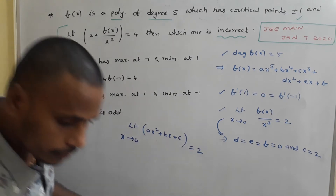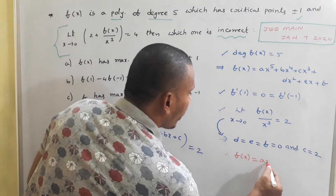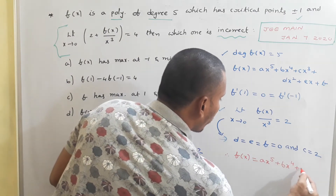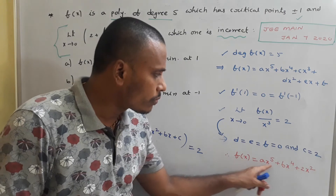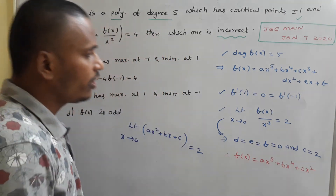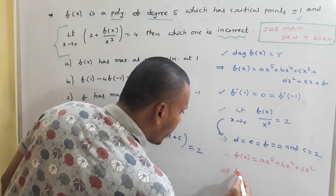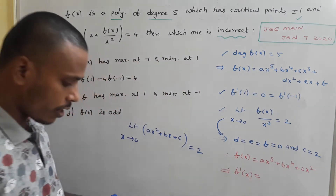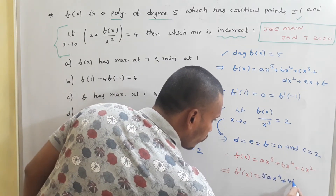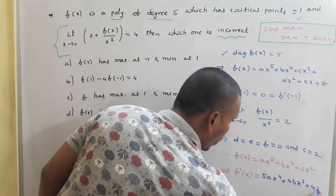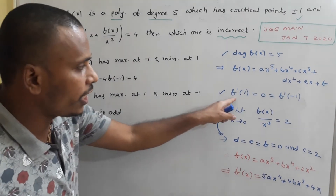Therefore, f(x) = ax⁵ + bx⁴ + 2x³. We still need to find a and b using the critical point conditions f'(1) = 0 and f'(−1) = 0. Differentiating: f'(x) = 5ax⁴ + 4bx³ + 6x².